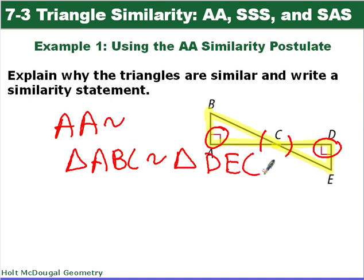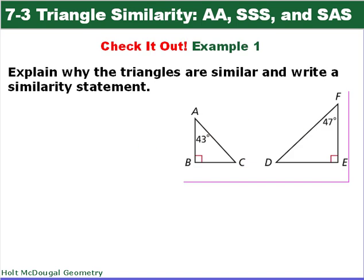This one is yours to try — explain why the triangles are similar, and don't forget to write your similarity statement, which tells me that ABC is similar to the other triangle with your vertices in the correct order.